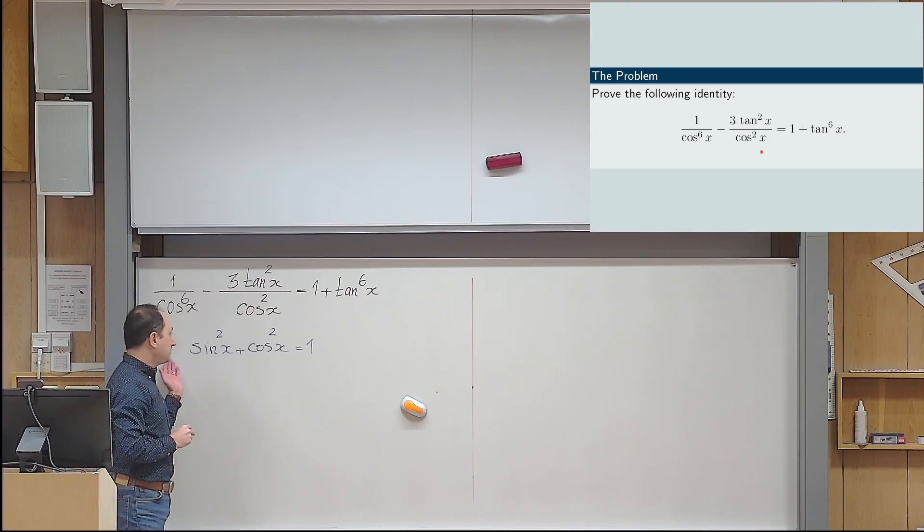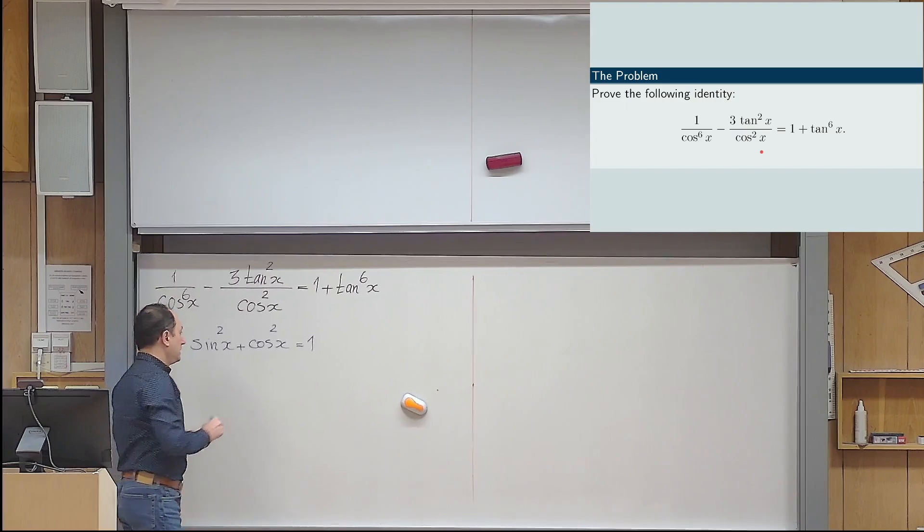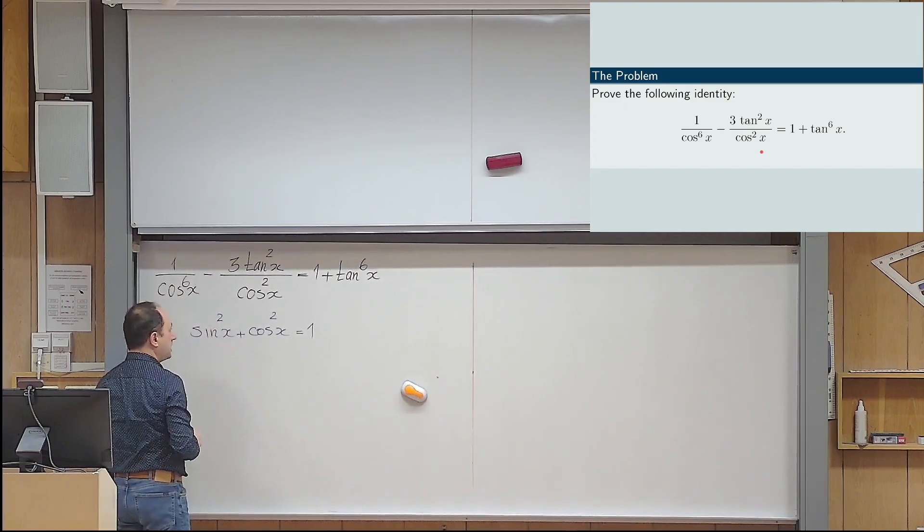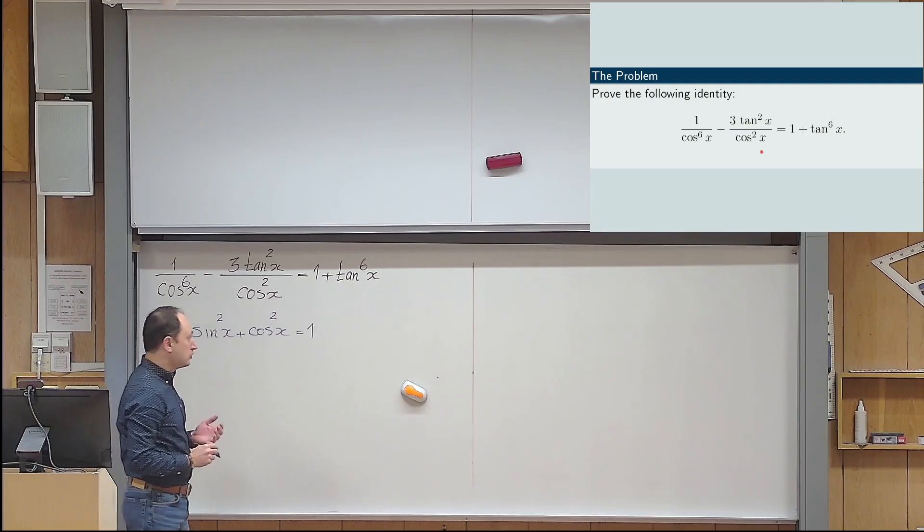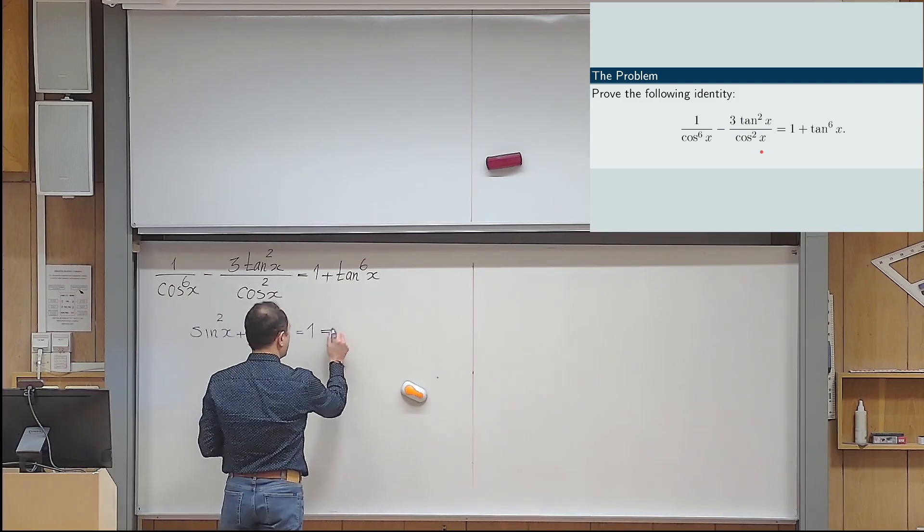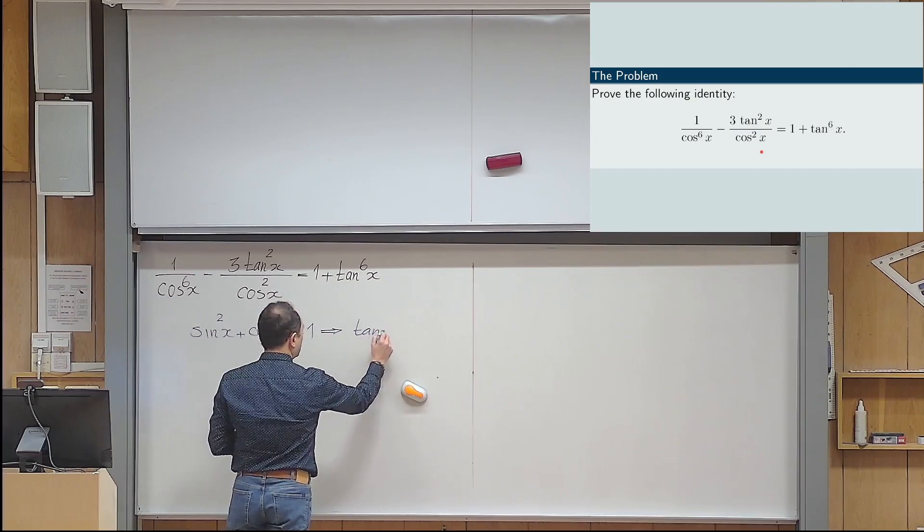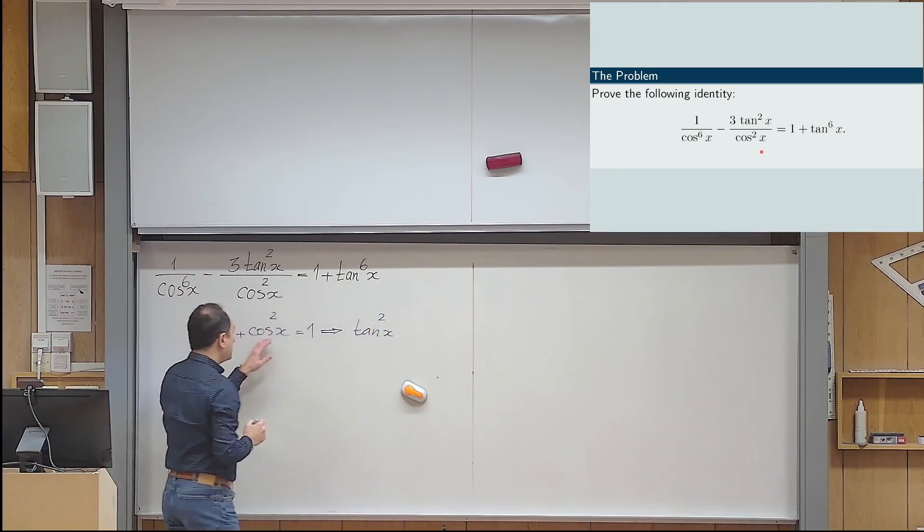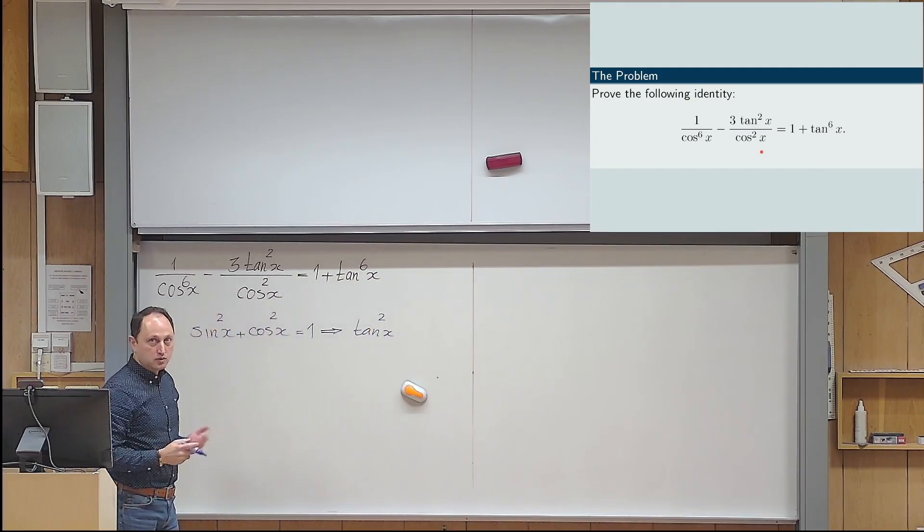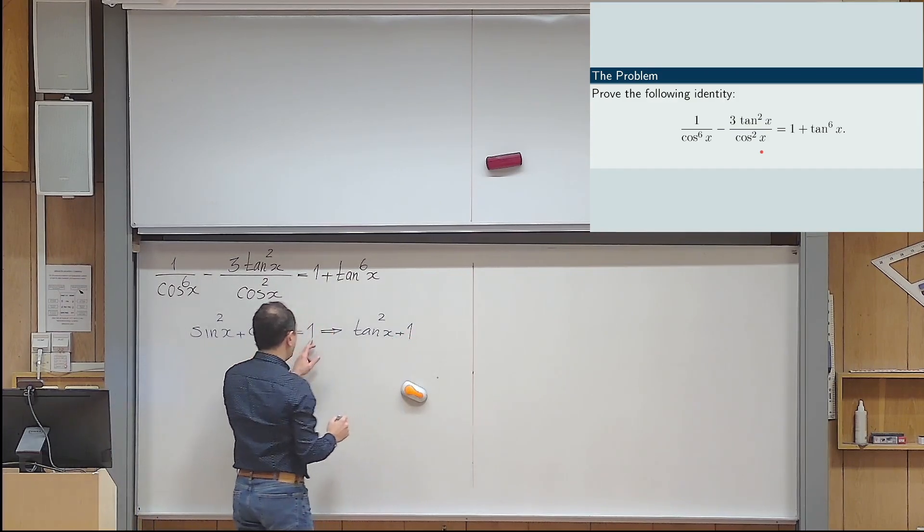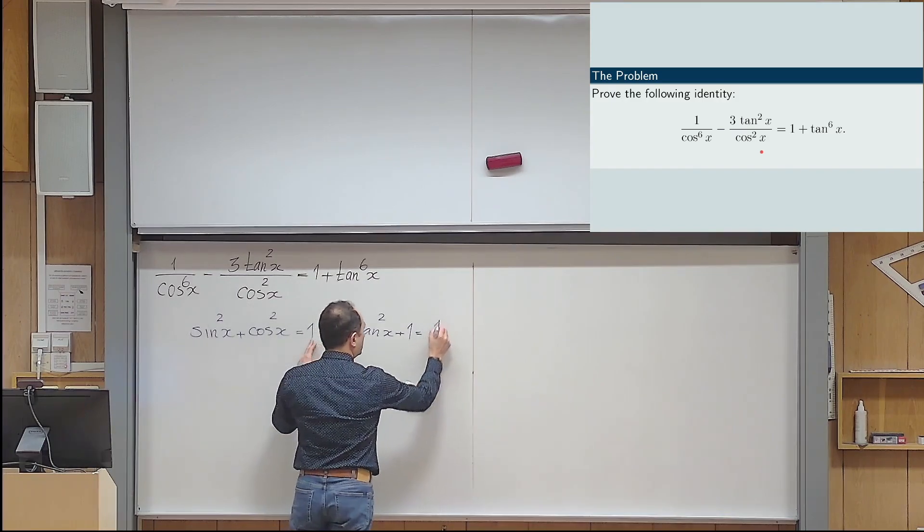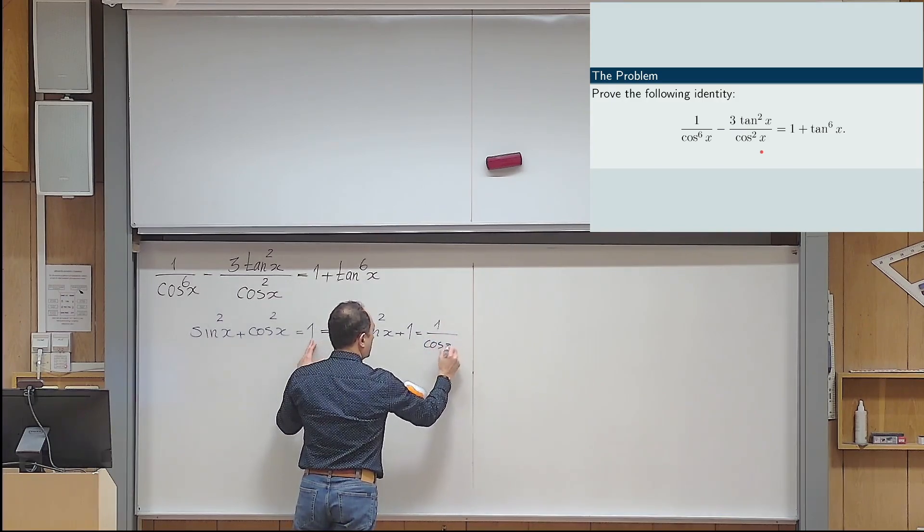So, if cosine x is not 0, I'm allowed to divide everything by cosine x squared here. So, I divide this by cosine x squared. Sine x squared divided by cosine x squared will give me tangent x squared. Cosine x squared divided by cosine x squared itself is 1, so this becomes plus 1.